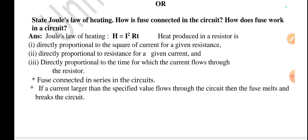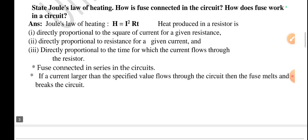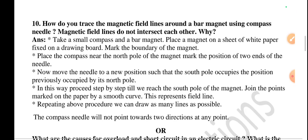Joule's law of heating: H equals I squared R T. Heat produced in a resistor is directly proportional to the square of current for a given resistance, directly proportional to resistance for a given current, and directly proportional to the time for which the current flows through the resistor. Fuse is connected in series in the circuit. If a current larger than the specified value flows through the circuit, then the fuse melts and breaks down the circuit. That's why we use a fuse.